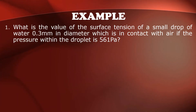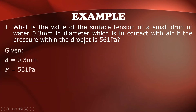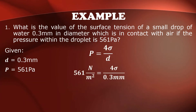Example 1: Find the surface tension of a small drop of water 0.3 millimeters in diameter, which is in contact with air, if the pressure within the droplet is 561 pascals. Given: diameter = 0.3 mm and pressure = 561 pascals. Using the pressure-droplet formula, substitute the pressure and diameter.